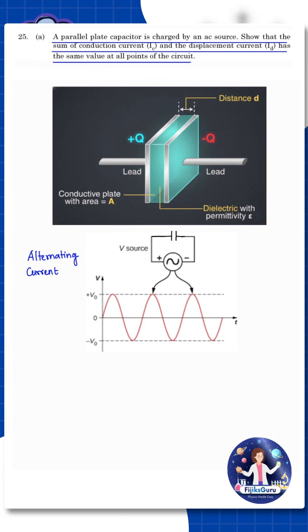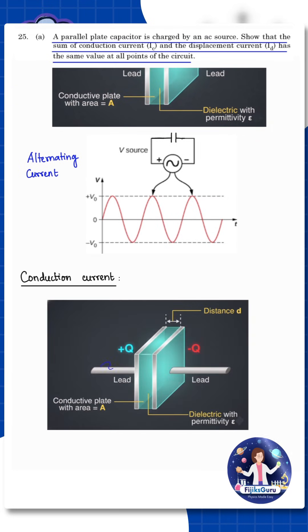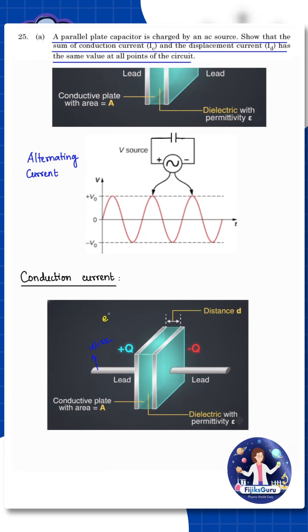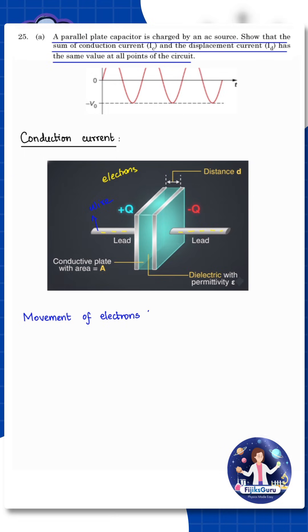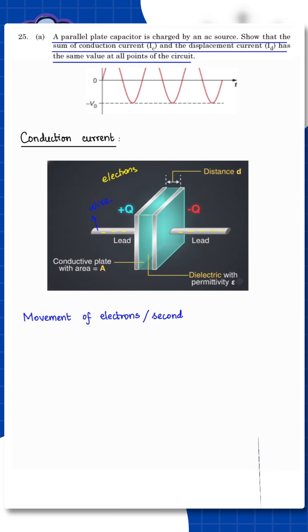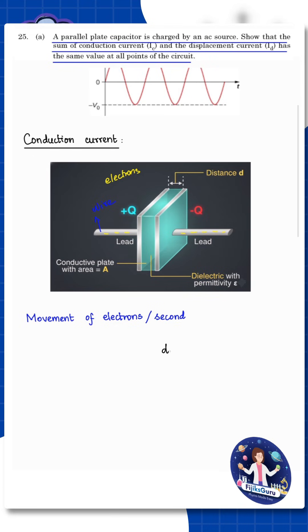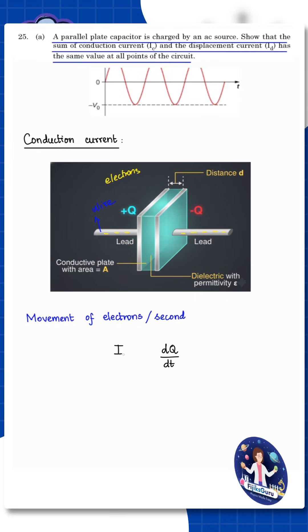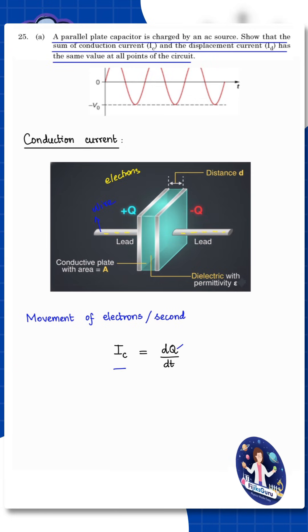The question is: show that the sum of the conduction current and displacement current are equal. In the wires, there is an electric field which causes electrons to flow. The movement of electrons per second is the conduction current. The formula is: IC equals dQ by dt, where IC is the conduction current, Q is the charge, and dQ/dt is the charge flowing per second.